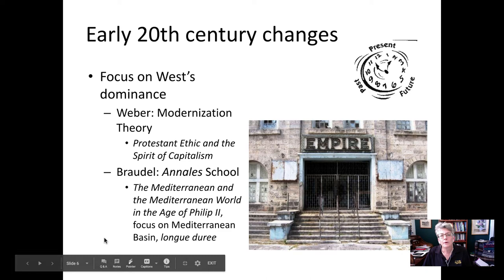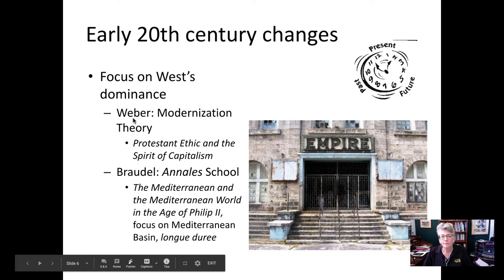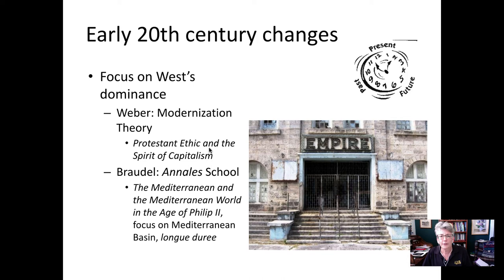But in the 20th century, we start to see some changes. The West seems to be dominant, and these theorists want to explain why the West is so dominant compared to other areas in the world. We have a couple of very influential models. Weber, with his modernization theory, relies heavily on Protestant ethic and work ethic, and how that creates the environment for Europe to advance.